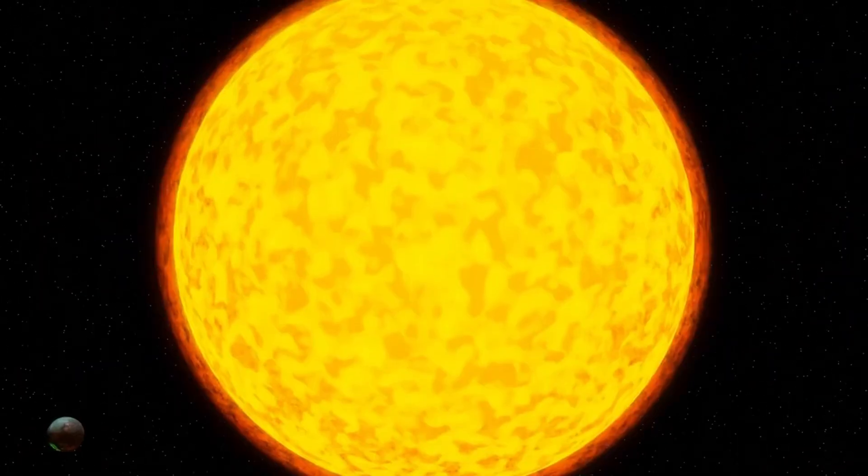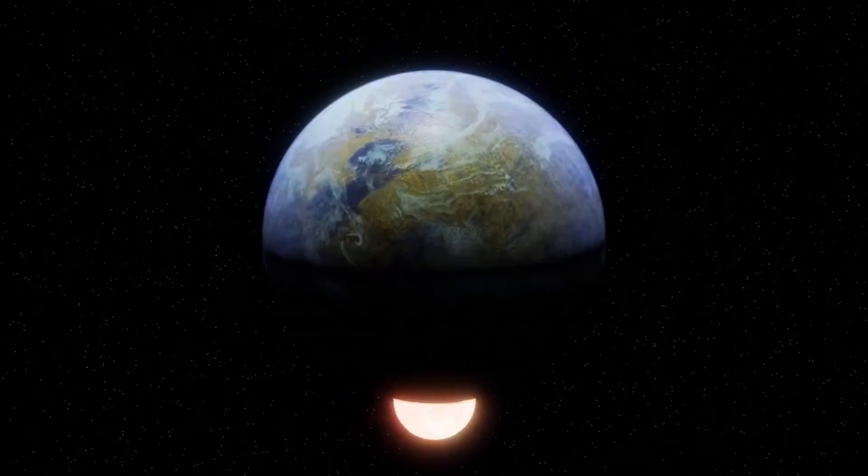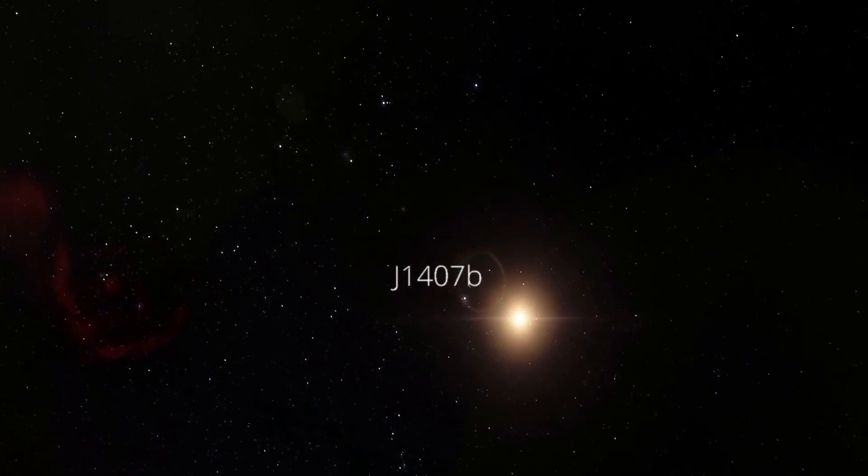In our universe, there are many strange and horrifying planets, some of them can blow your mind. Like there is one located 433 light years away from Earth, J1407b,